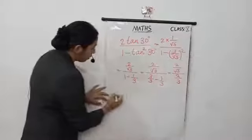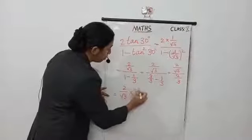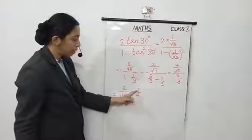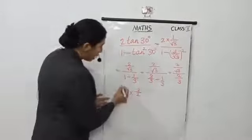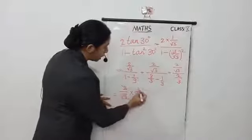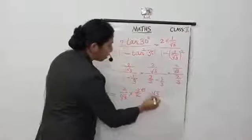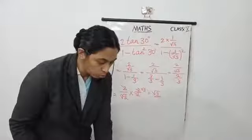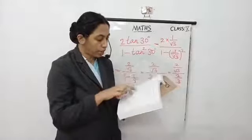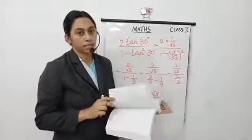Now multiply with the reciprocal: 2 by root 3 into 3 by 2, since the reciprocal of 2 by 3 is 3 by 2. We can cancel the 2 and 2, and root 3 and 3 gives root 3. So the final answer is root 3. Now check: tan 60° is root 3, so in the given options, option C — tan 60° — is the correct answer.